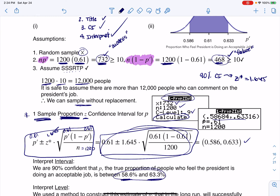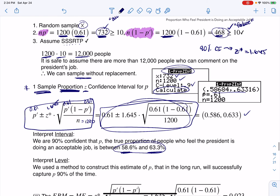So I am 90% confident that p, the true proportion of people who feel the president is doing an acceptable job, is somewhere between 58.6% and 63.3%. So if I were to run the census, I think the parameter is somewhere in here. And the method we use to construct this estimate, in the long run, works about 90% of the time. Meaning if you did another survey of 1,200 folks and made an additional confidence interval, and another survey, and another CI, and another CI, about 90% of those CIs will capture the parameter, and about 10% won't.